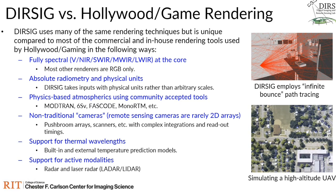What makes DIRSIG different compared to most other tools is that it's fully spectral at the core. When we describe scenes and build scene data models, we try to describe them from the UV all the way out into the long-wave infrared. Rather than just picking RGB colors, we have spectral reflectances and emissivities for all materials. It's a physics-driven model, meaning all inputs have real physical units and we're doing absolute radiometry — when we compute a pixel solution, we know what that solution is in terms of photons. DIRSIG relies on tried-and-true tools in the remote sensing community for atmospheric radiative transfer, most often the MODTRAN radiative transfer code, which handles how energy moves from one location to another, from the sun down to the ground.